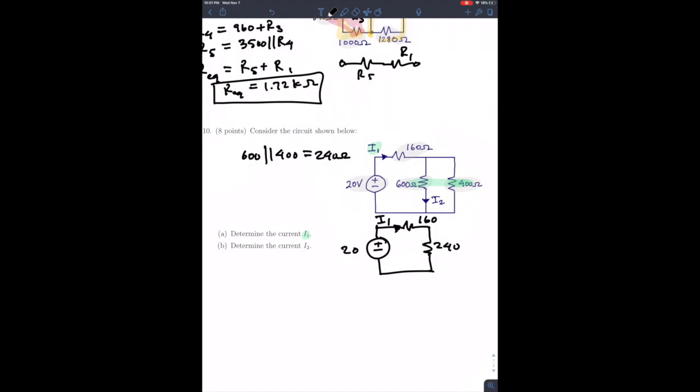So from there, I1. You can combine, in my head, I combined these two resistances. So that would be 400. And now, I1, just using Ohm's law, is 20 divided by 400. All right, cool.